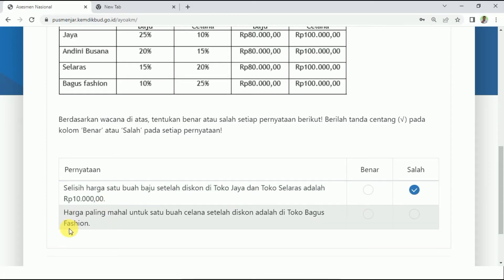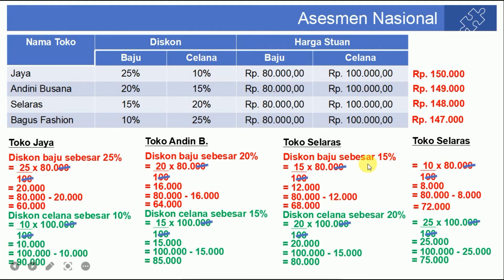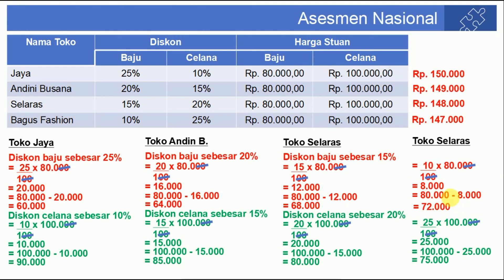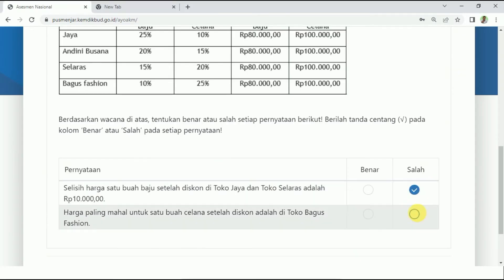Pernyataan kedua: harga paling mahal untuk 1 buah celana setelah diskon adalah di toko Bagus Fashion. Celana toko Bagus Fashion itu 75 ribu. Yang paling mahal justru di toko Jaya, 90 ribu. Bagus Fashion seharusnya paling murah, 75 ribu. Berarti pernyataan kedua juga salah.